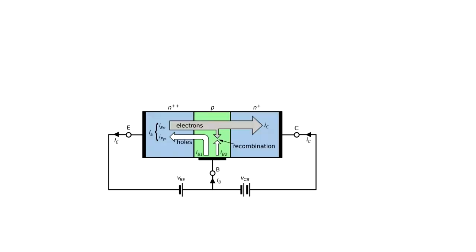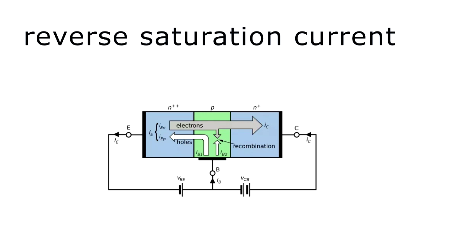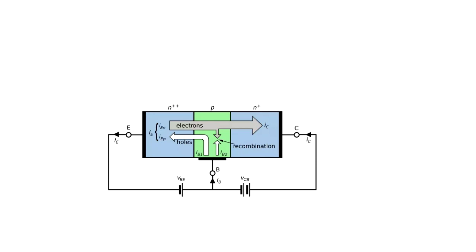There is one more thing that happens when the BJT is in active mode: the reverse saturation current. Since junction J2 is reverse biased, there must be a reverse saturation current — we can call it ICO. Now we can write a relation between the currents: IC is equal to alpha times IE plus ICO. This is the equation for IC.